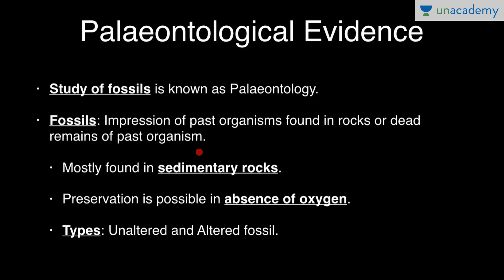If we have a section of earth's crust, we can see layers of sediment one over the other. Each layer of sediment has different life forms and represents the life forms that died during the formation of that particular sediment. Preservation is possible in the absence of oxygen, because if oxygen is present it would lead to decay and not fossilization.